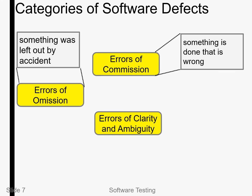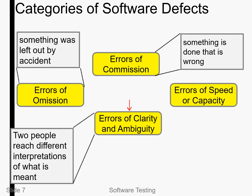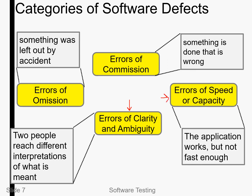Next is error of clarity and ambiguity — when two people have different interpretations of the same thing, that creates clarity and ambiguity issues. Then there is error of speed and capacity: if an application is working but its performance is slow — not fast, but still functioning — that is also a kind of software defect.